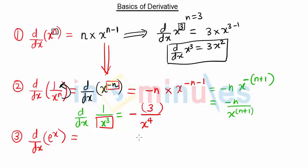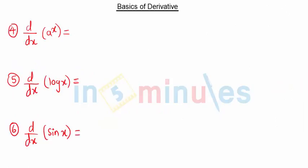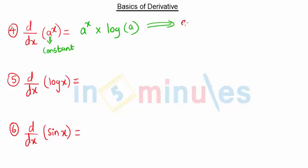What is the derivative of e raised to x? This is one of the simplest derivative formulas: the derivative of e raised to x is simply e raised to x. Next, the derivative of a raised to x — here a is a constant — so the derivative of a raised to x is a raised to x multiplied by log of a. For example, the derivative of 3 raised to x is 3 raised to x times log 3.